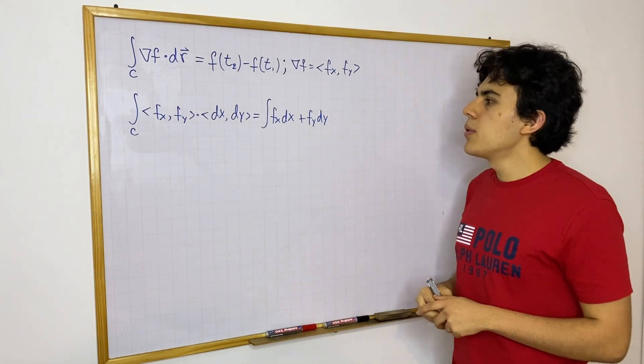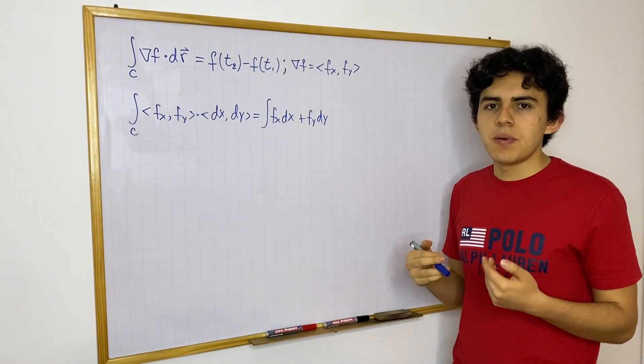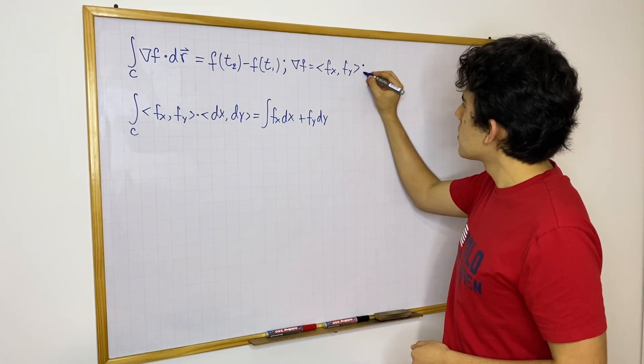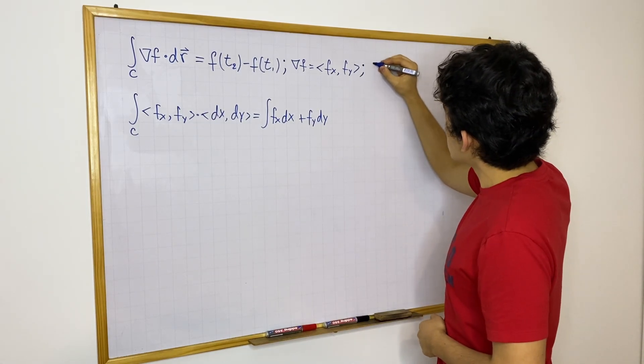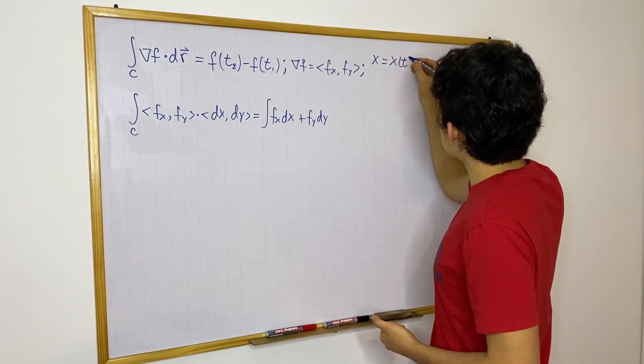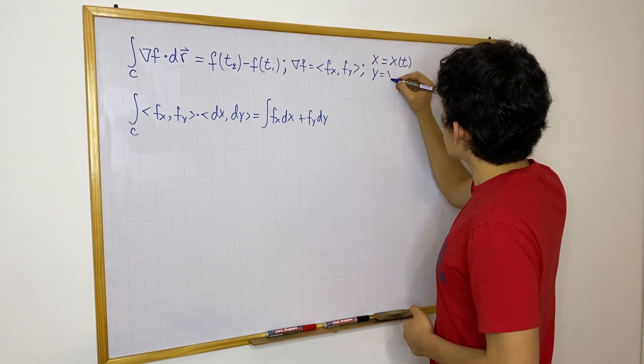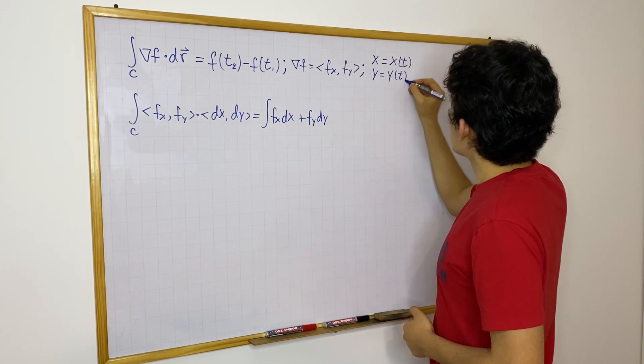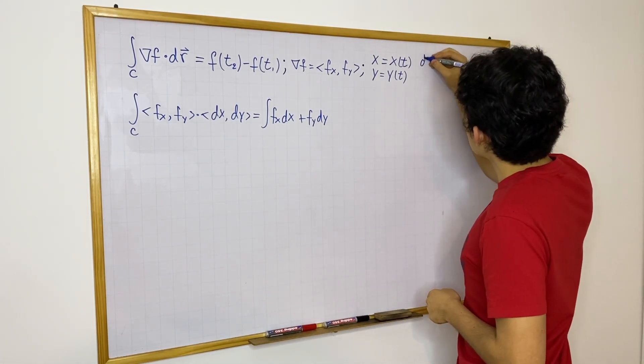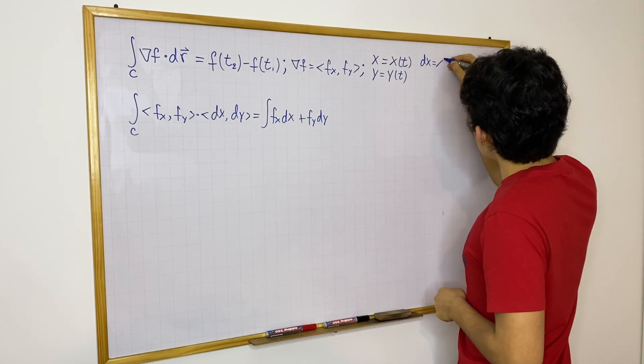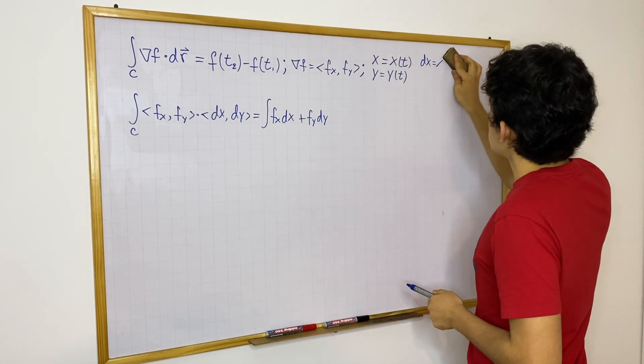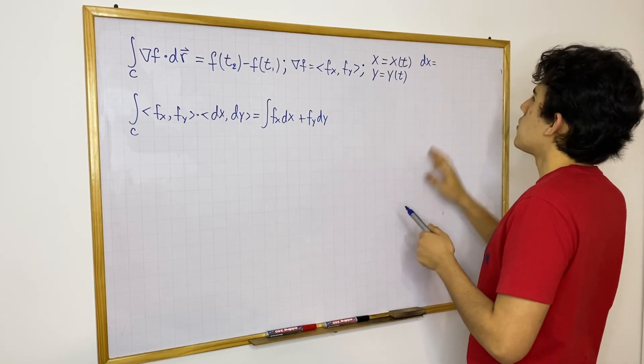Now, I will use a parametrization with respect to t. That is something that I'm going to define up here. So let's say that I'm going to let x be a function x of t, and y just be another function y of t. And then it follows that dx is going to be x prime of t, and I'm actually going to use differential notation.